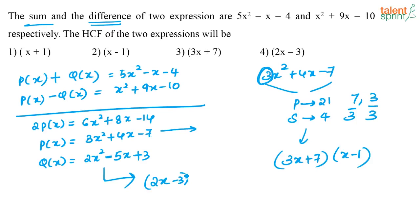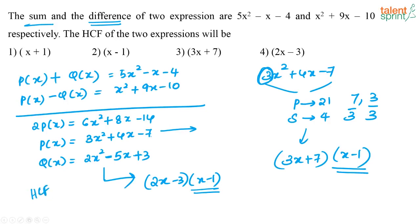Similarly, Q(x) = 2x squared minus 5x plus 3 factors as (2x minus 3)(x minus 1). The common factor in both cases is x minus 1. So the HCF of P(x) and Q(x) is x minus 1.